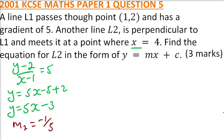Then, they meet at x equals 4. So, we need to find y using this equation. y equals 5 multiplied by 4 minus 3. This is 20 minus 3 is 17. Then, it means the point where they meet is at (4, 17).